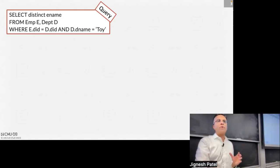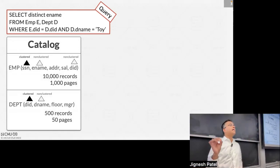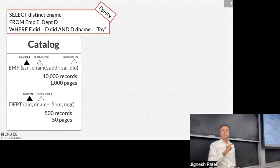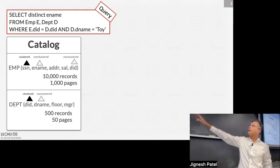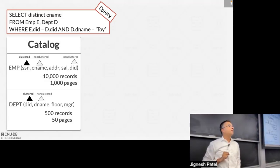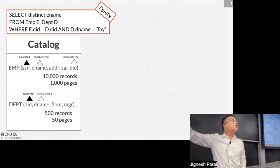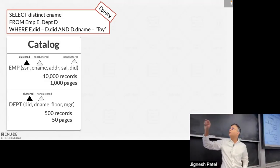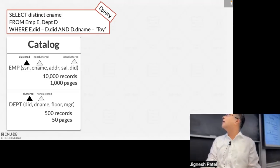To set up the machinery for query optimization, we first need access to the catalog — think of it as metadata for all the data you have, a mini database. It has information like: there are 10,000 records in the employee table and 500 records in the department table, spread across 50 pages — so 10 records per page. Dark triangles indicate a clustered index (on SSN in the employee table), and unclustered indices on employee name and department ID.